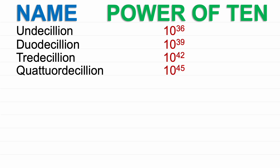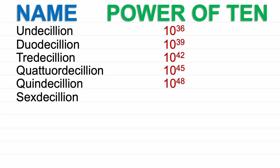Quattordecillion: 10 to the power of 45. Quindecillion: 10 to the power of 48. Sexdecillion: 10 to the power of 51.